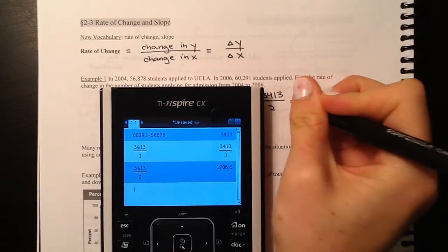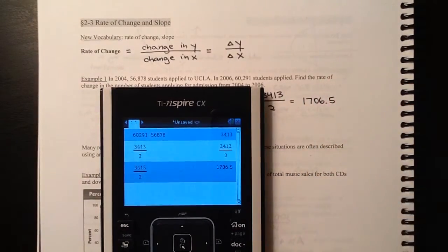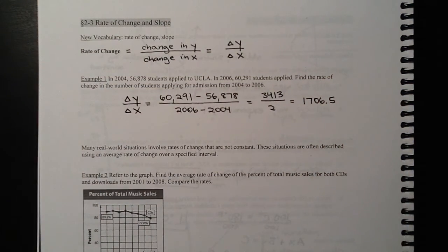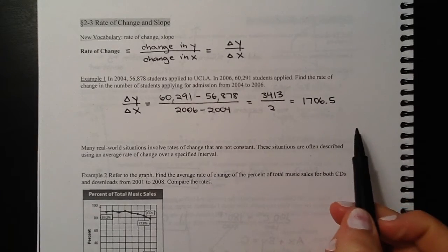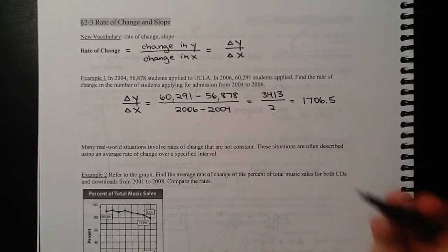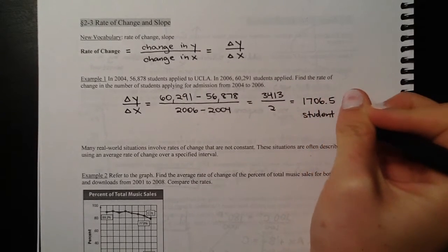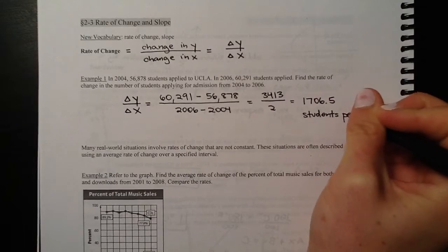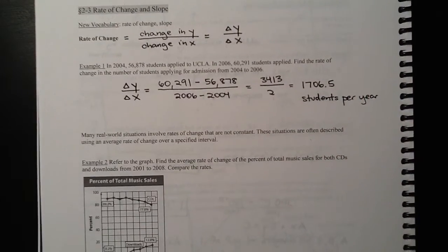In decimal form, we get 1,706.5. So when you're talking about a rate of change, this is students per year. There was an increase of this many students per year. So since it's a context-based problem, you always want to give some sort of units so you know what that number means.